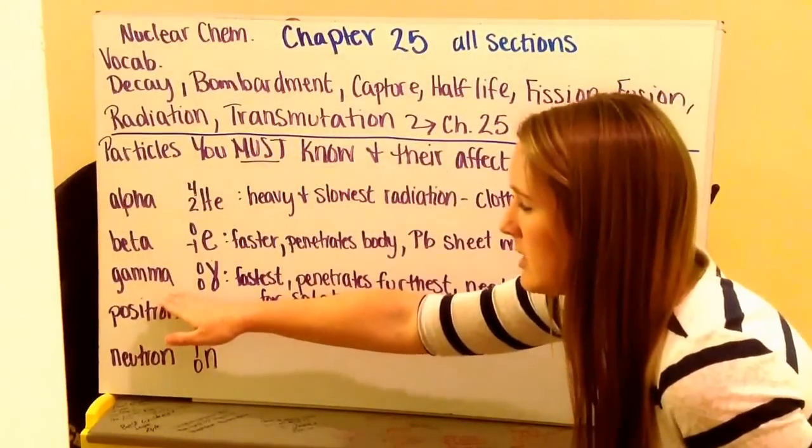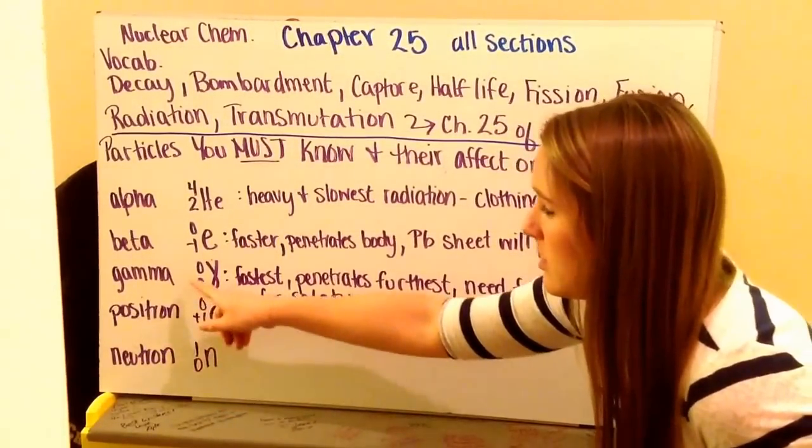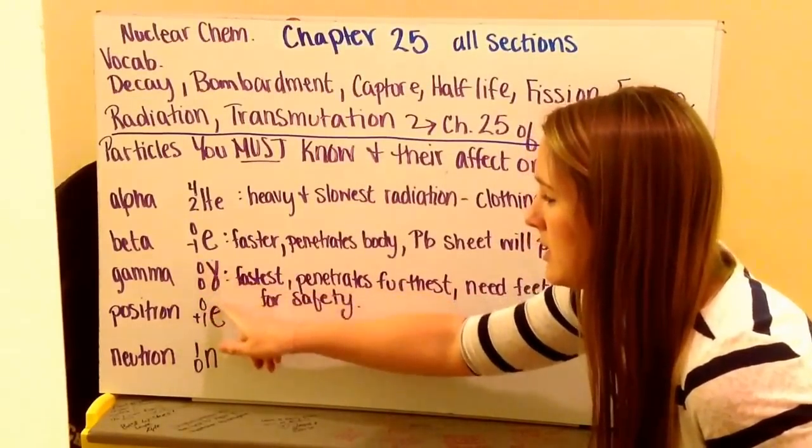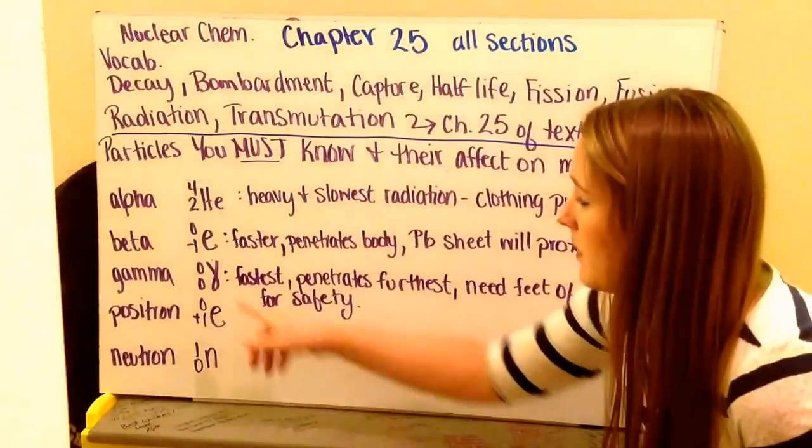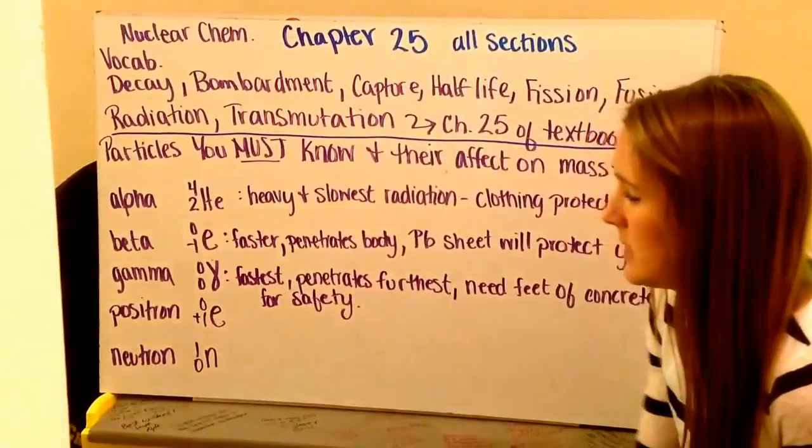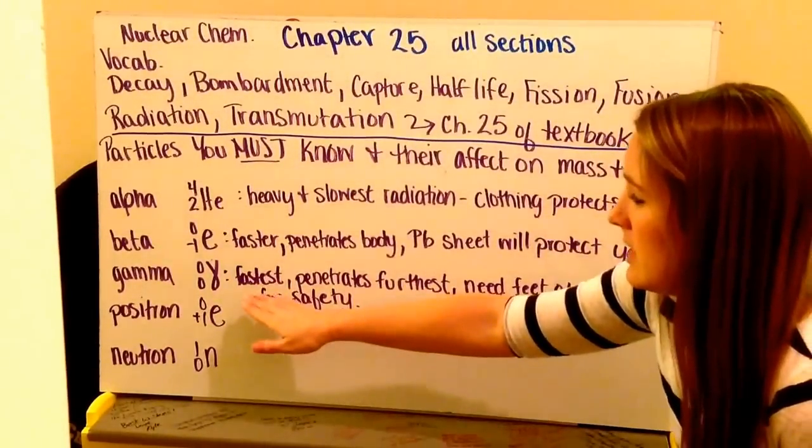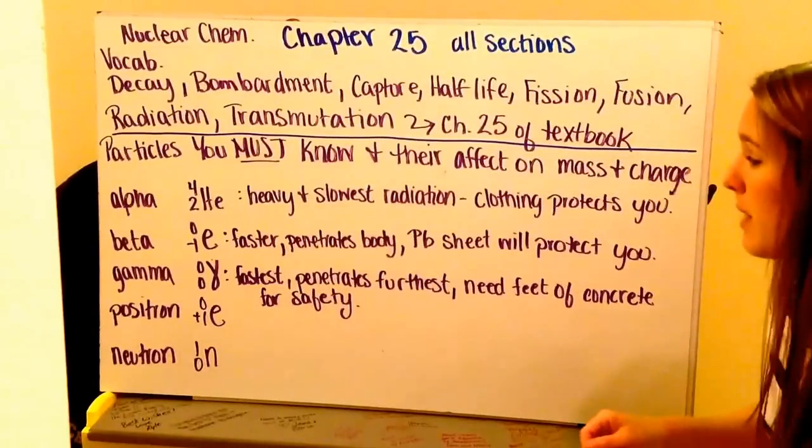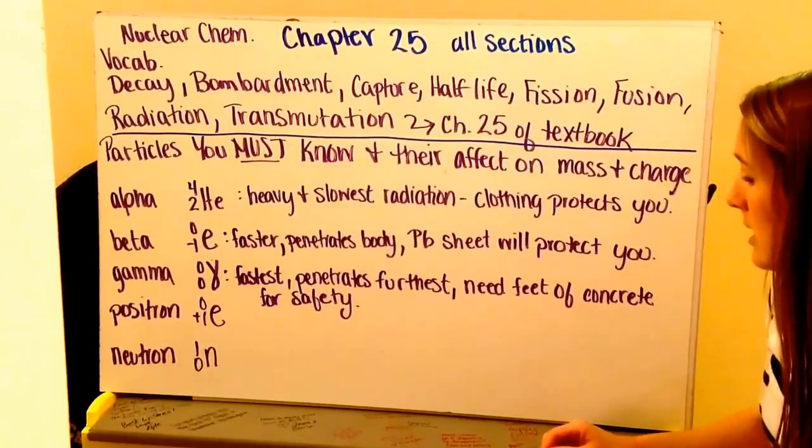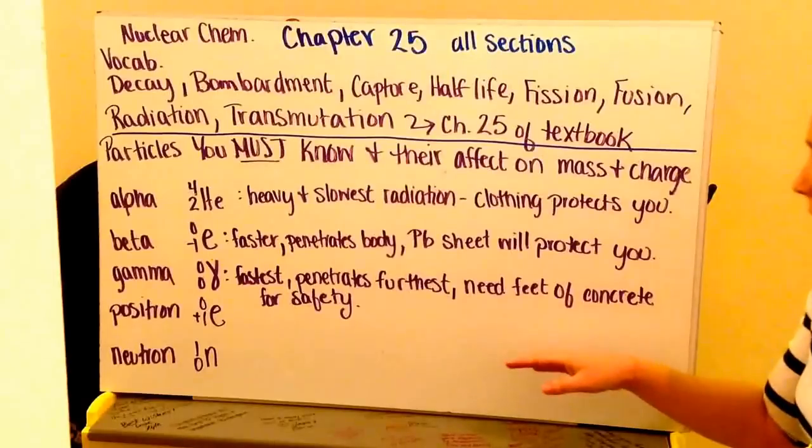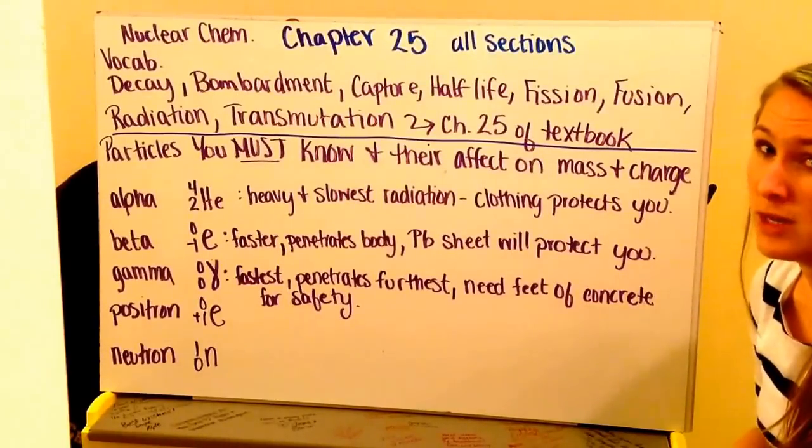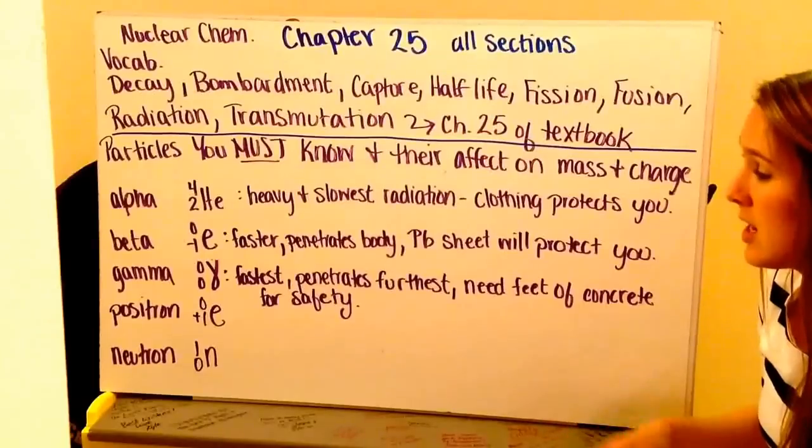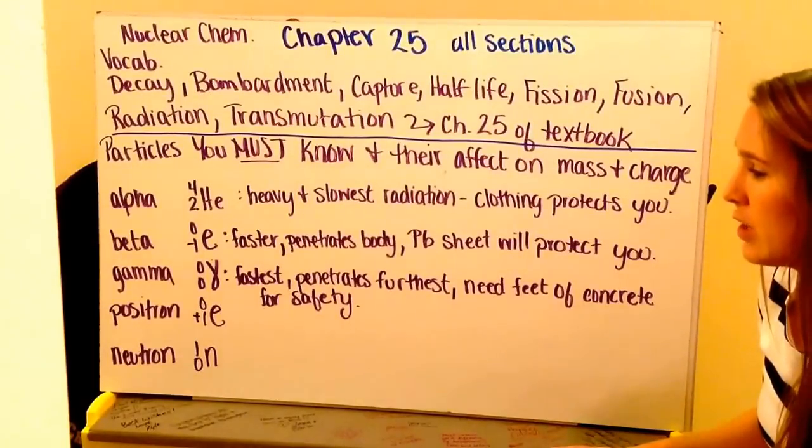Next we have gamma rays and gamma radiation. This is abbreviated as a particle that has no mass and no charge. And it is a Greek sign for gamma. So it looks like an upside down curvy Y. This is the fastest radiation and it's going to penetrate completely through your body, through your skin, pass straight through you. And in order to protect yourself from this you need feet upon feet of concrete before it would stop penetrating and would not harm you in any way.